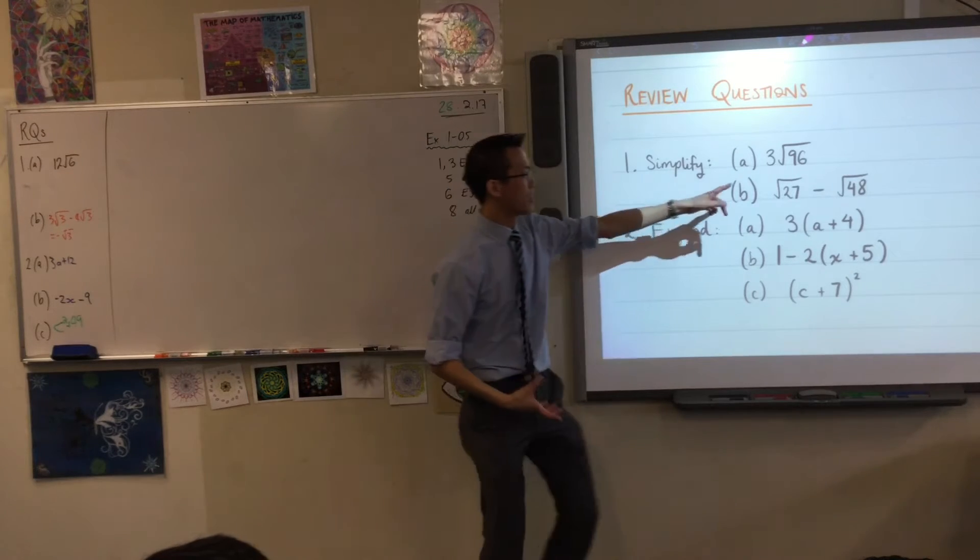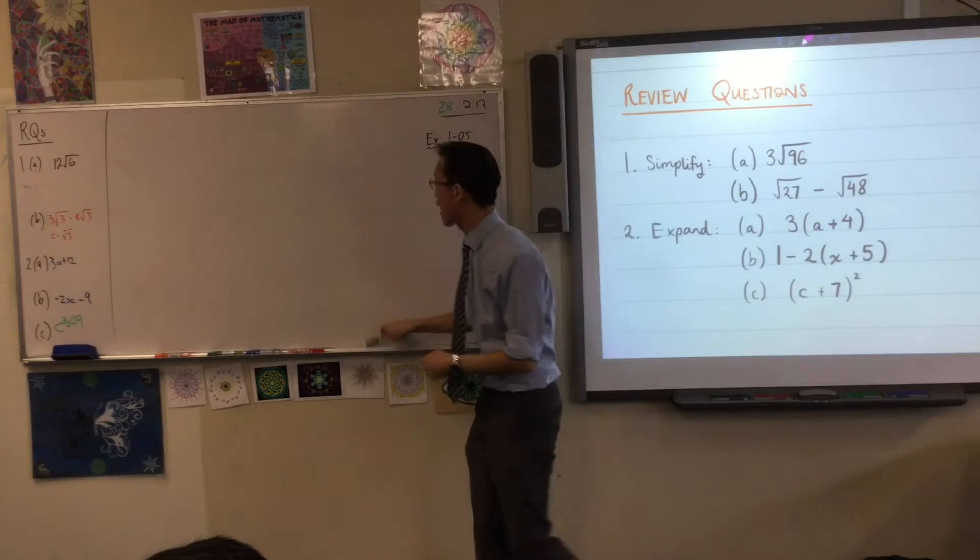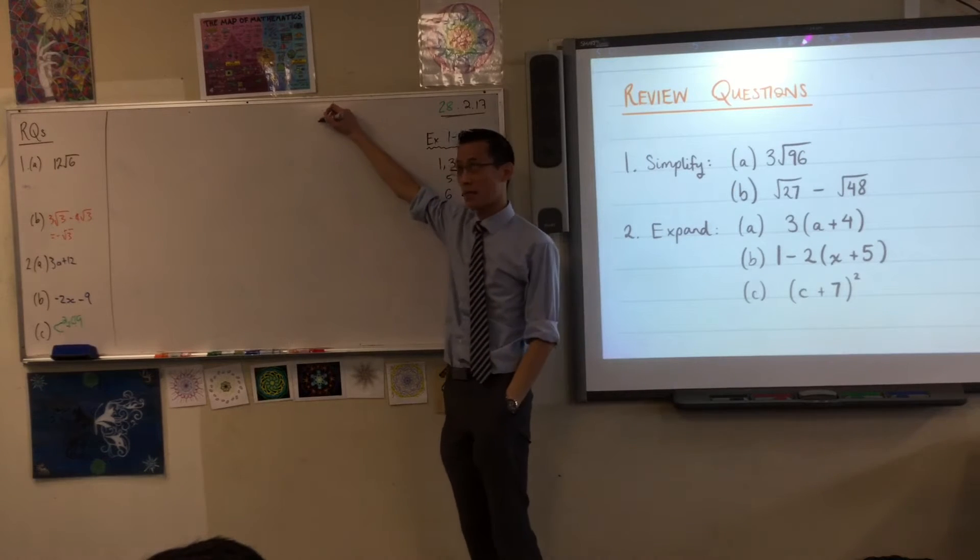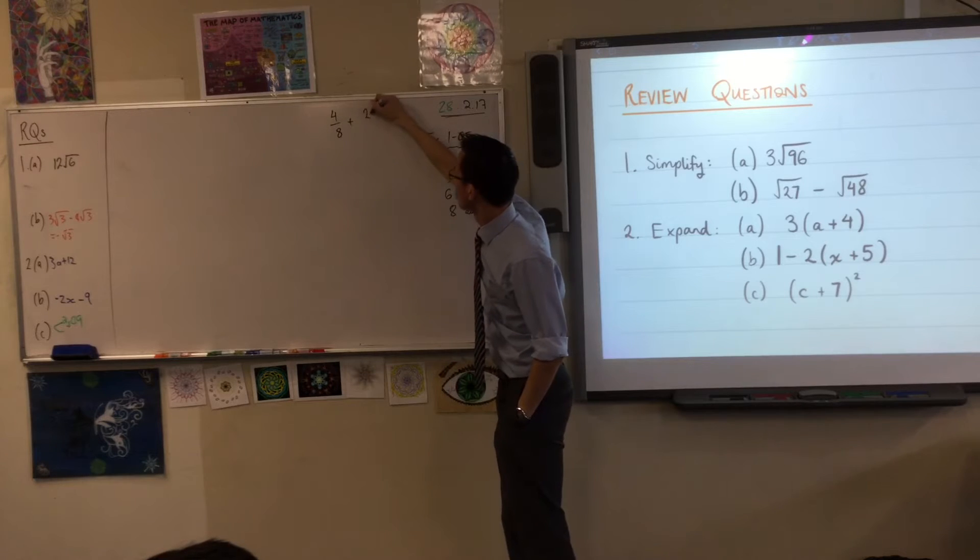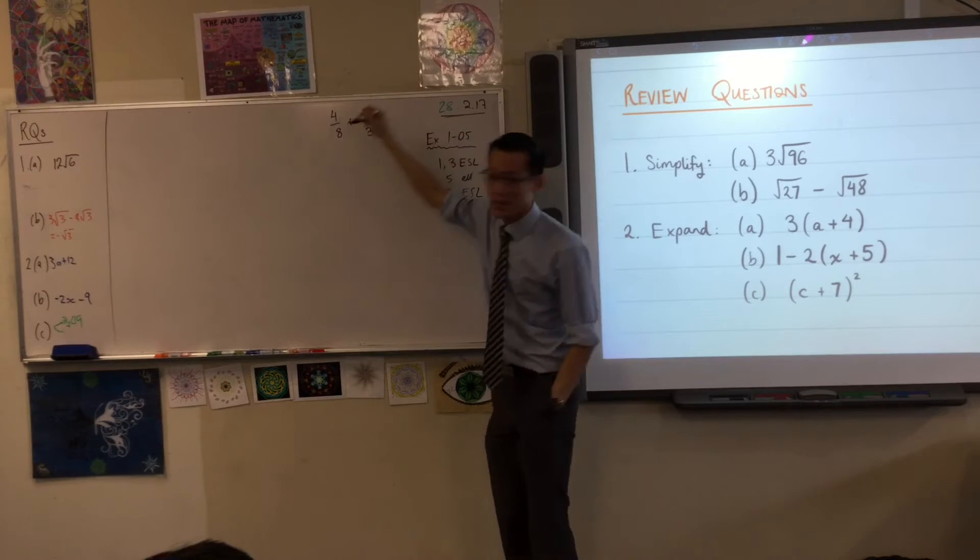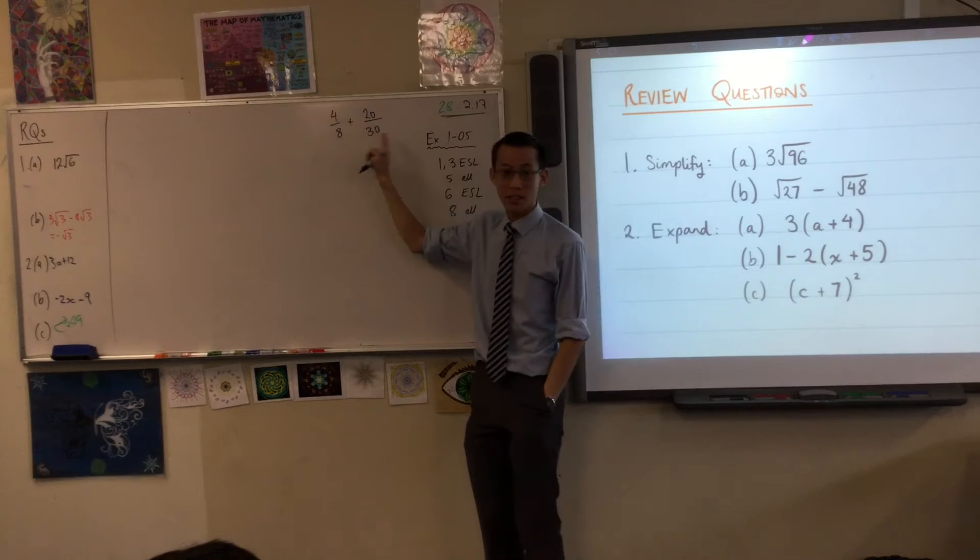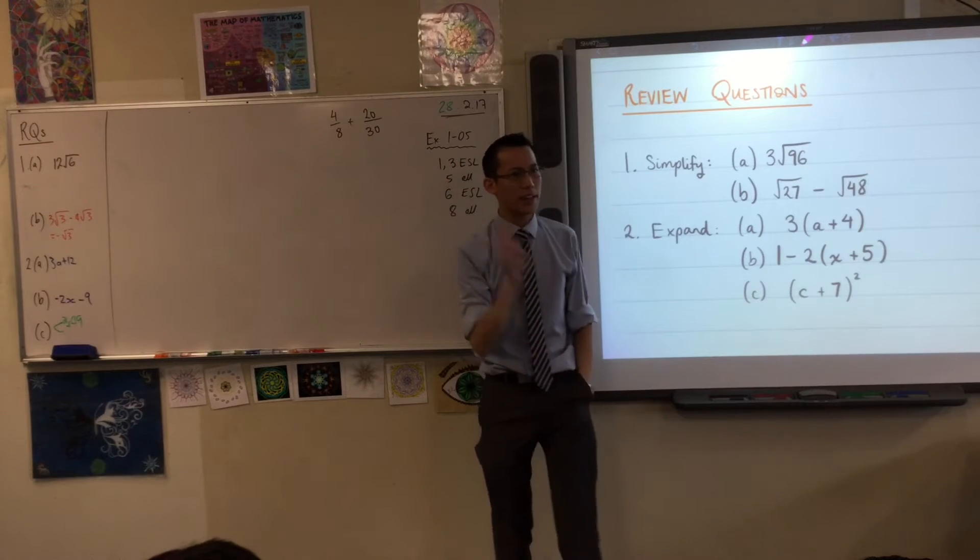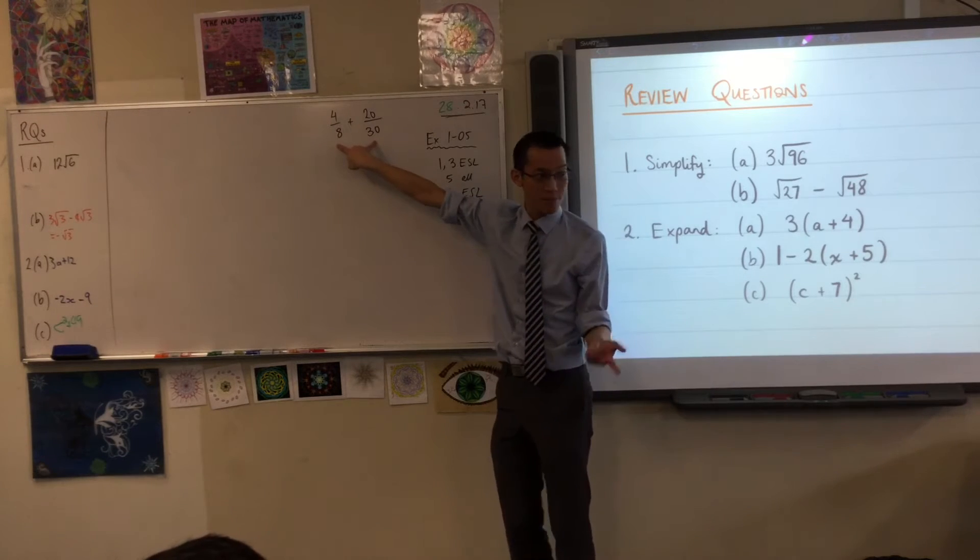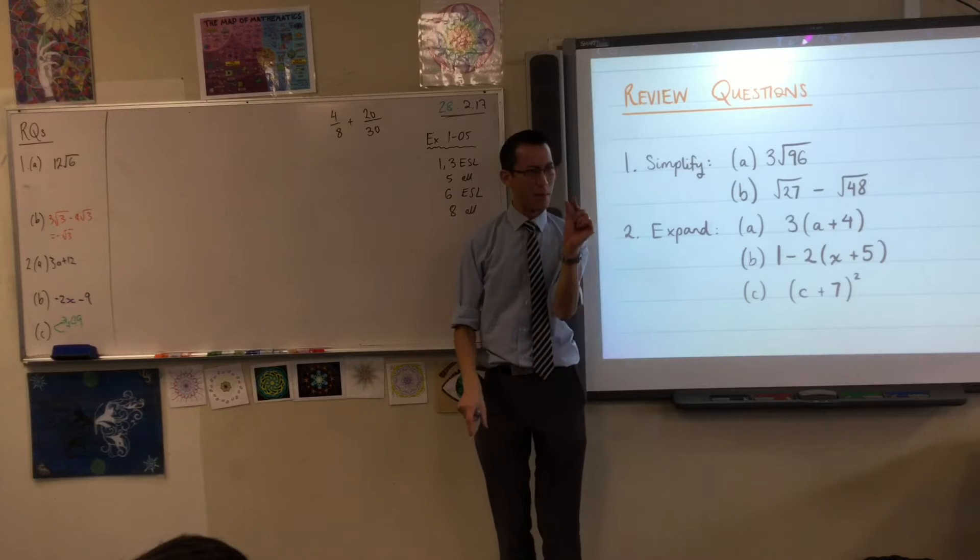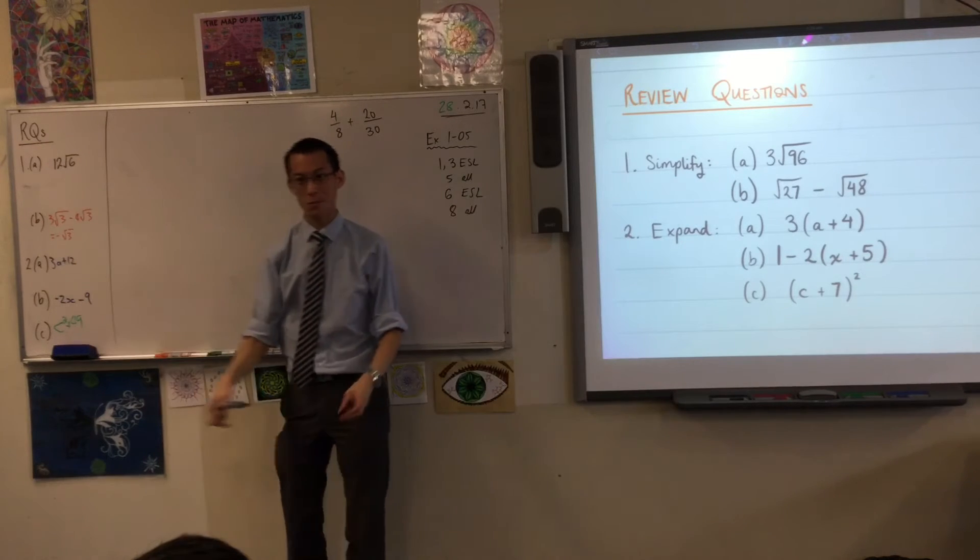So that's why we say it's better to get this number as small as you possibly can. Just like if you had fractions. I'm thinking of an example: 4/8 plus 20/30. You could add these without changing what these fractions look like. But clearly it's simpler if we convert these to equivalent ones, where the denominator is a smaller number. That's easier to work with. And it's the same deal with all of these. Okay?